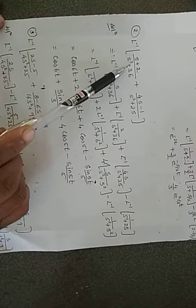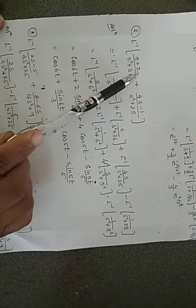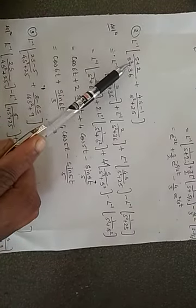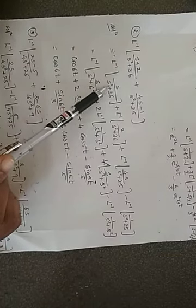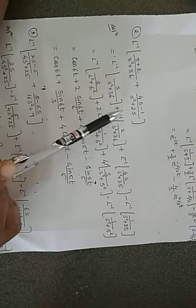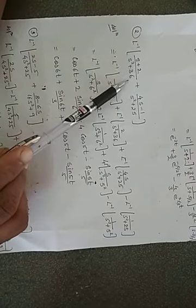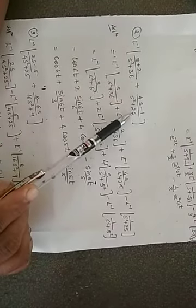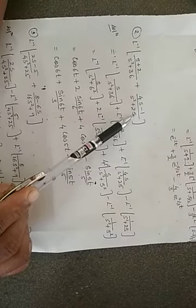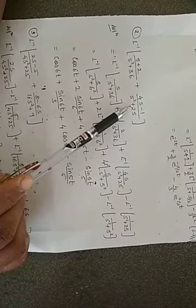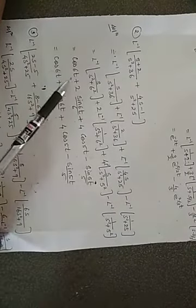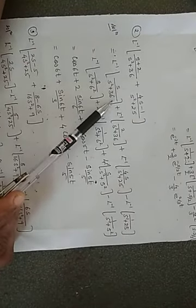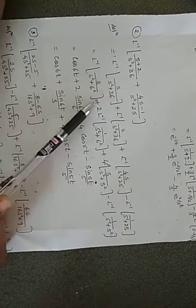It will become L inverse of s upon s squared plus 36. Whenever you get a combination in the numerator, try to split it out. So: L inverse of s upon s squared plus 36, plus L inverse of 2 upon s squared plus 36, plus L inverse of 4s upon s squared plus 25, minus L inverse of 1 upon s squared plus 25. So, s upon s squared plus 6 squared, since 36 means 6 squared.